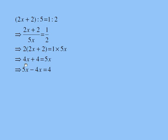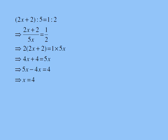I move the variables on the same side. I have 5x minus 4x on the left hand side and 4 on the right hand side. 5x minus 4x is x, so x is 4.